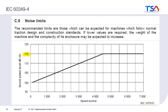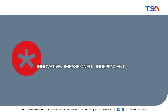Finally, the annex of the standard gives us limits for noise. For self-ventilated machines this is especially important because at higher speeds they can become quite loud. Depending on the speed of the machine, the maximum allowed sound power level is between 100 and 115 dBA. In summary, the standard 6349 gives us lots of information about what you should look at when you specify, order, or test a new traction machine.